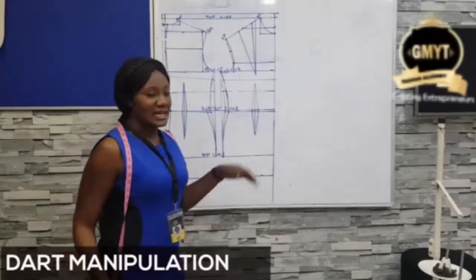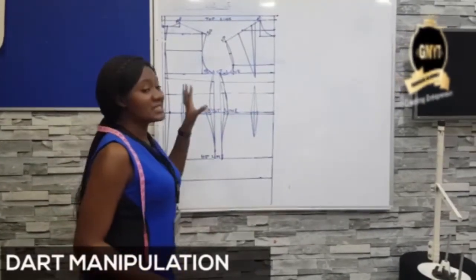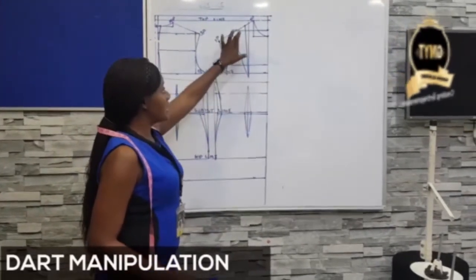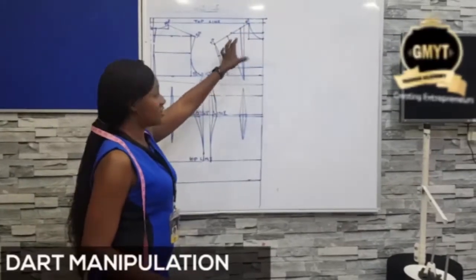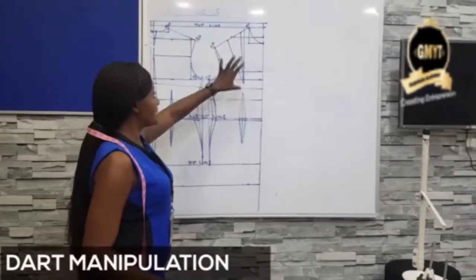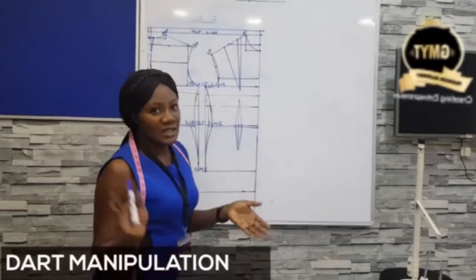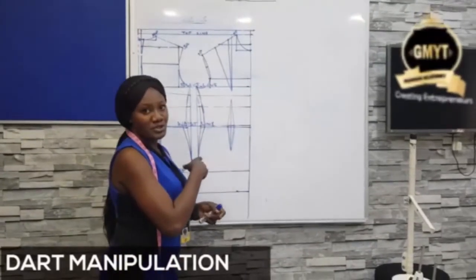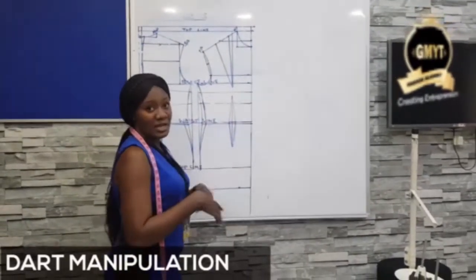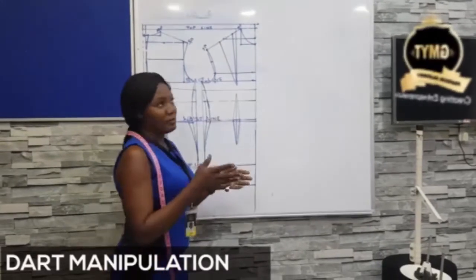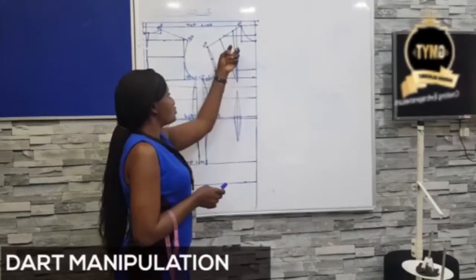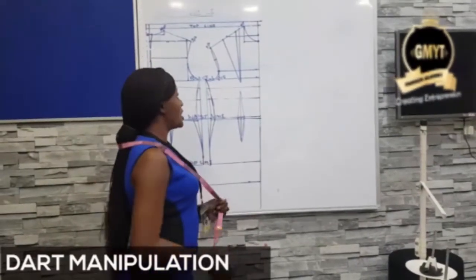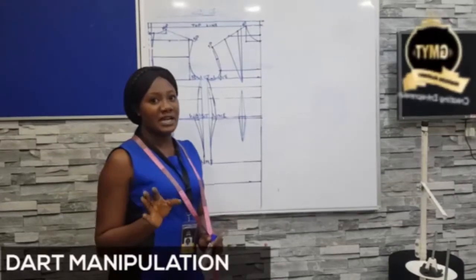Now back to the class where we're treating dart manipulations. We're using the Natalie Bodies Pattern, and in this bodice pattern comes the shoulder dart — also called the Asian dart, whichever one you choose to call it. The whole essence of dart manipulation is transferring one dart from one position to another to get your desired style, shape, and pattern. For this dart manipulation, we have 10 different dart manipulations. The first is our shoulder dart, which comes with our bodice pattern.